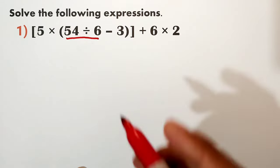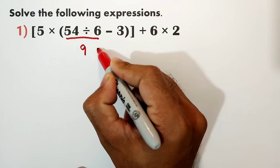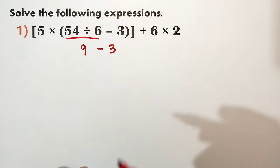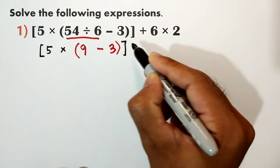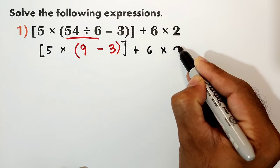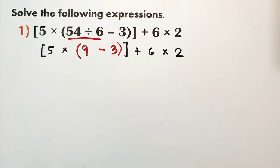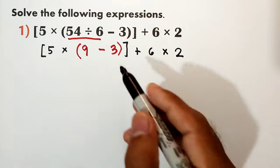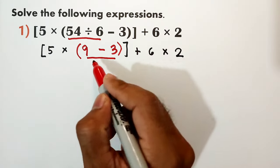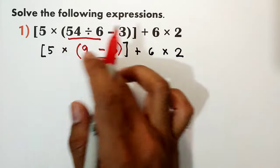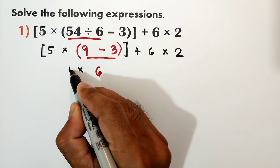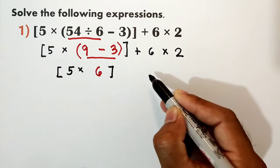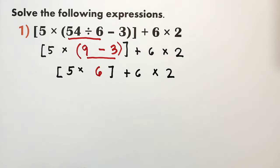54 divided by 6 is equal to 9. And then subtract 3. We rewrite all terms that were not yet used: bracket, times 5, plus 6 times 2. Next, still inside the parentheses: what is 9 minus 3? That is equal to 6. So now we have 6 still inside the bracket, times 5, plus 6 times 2.